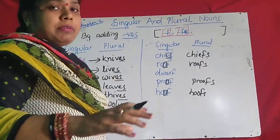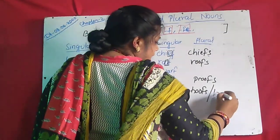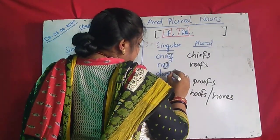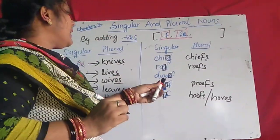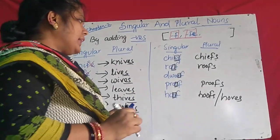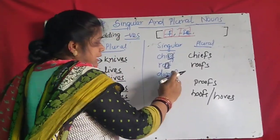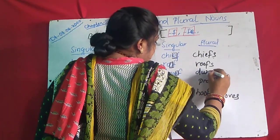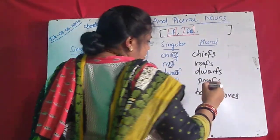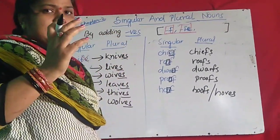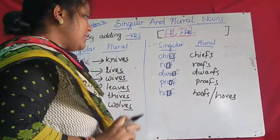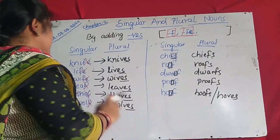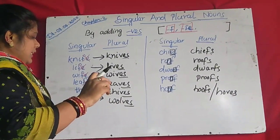Here both rules will be followed. 'Hoof' can be H-O-O-V-E-S — 'hooves' — also right, and H-O-O-F-S — 'hoofs' — also right. Both are right. And here, 'dwarf' — D-W-A-R-F — before F there is R, which is a consonant. So we said before F if there is a vowel, S will be added, but here before F there is R, a consonant. But its plural is only 'dwarfs,' because the R is silent. So if before F there is a vowel, simply S will be added. If there is a consonant, then you give it VES.